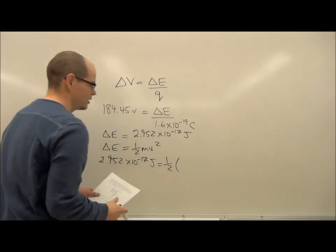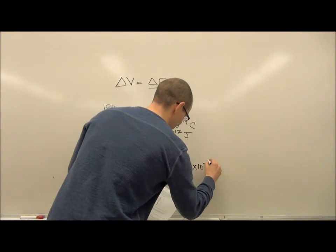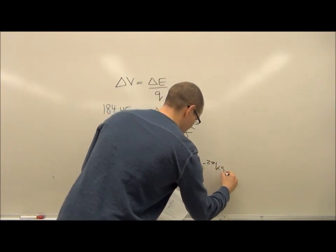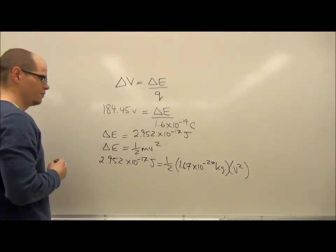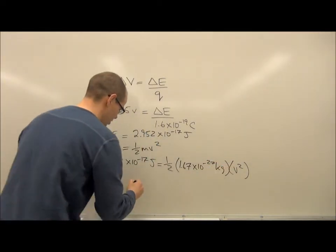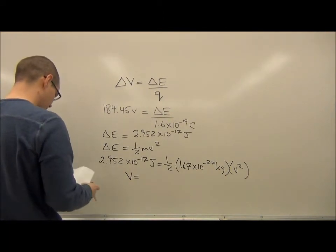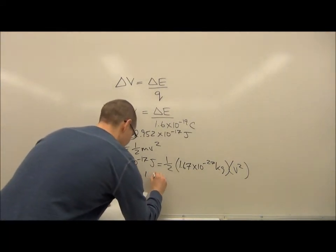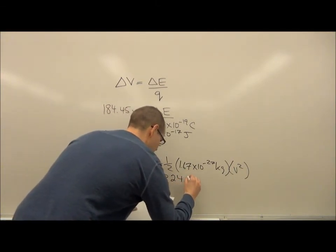So I'm going to do that here. Now the mass, you're going to get that off your data table. It's 1.67 times 10 to the negative 27 kilograms. And we're solving for the velocity. So if we use this equation, we can find the velocity. You get the velocity of the particle going into the plates then, remembering the square root as this.